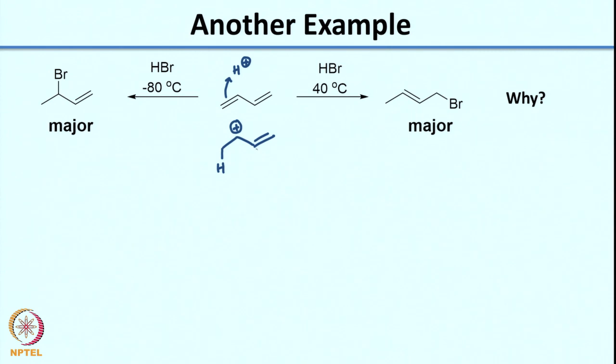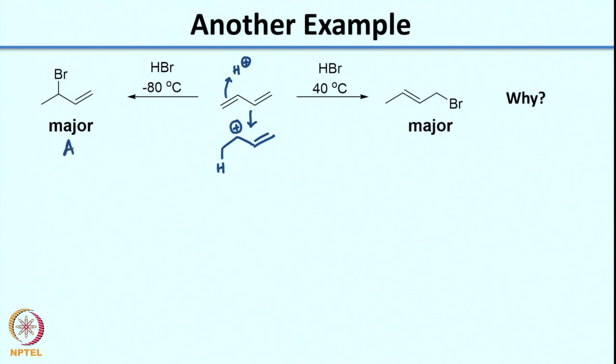When H+ adds, you generate the more stable carbocation, because here you have a carbocation which is in conjugation with a double bond. So you generate the more stable carbocation as the intermediate formed in either of these cases. Once you form this intermediate, you have to think about why in one case you have the kinetically controlled product and in the other case the thermodynamically controlled product. Again, you can pause and think. When you compare both products - I'll call them product A and product B - which do you think is more stable?